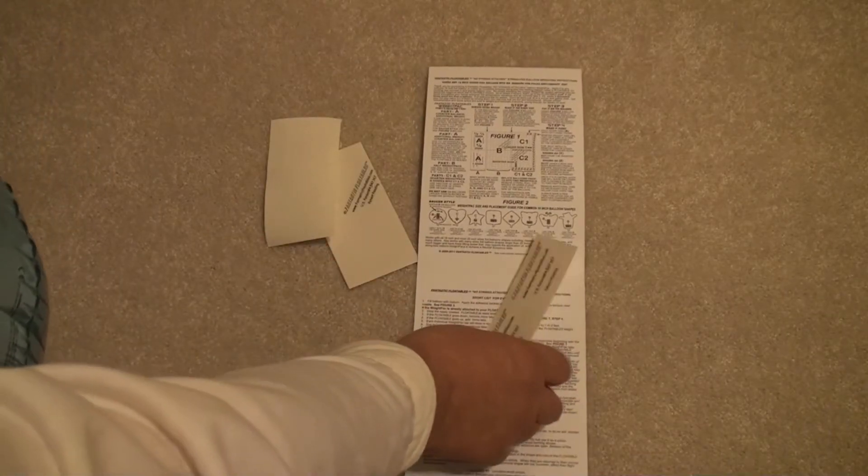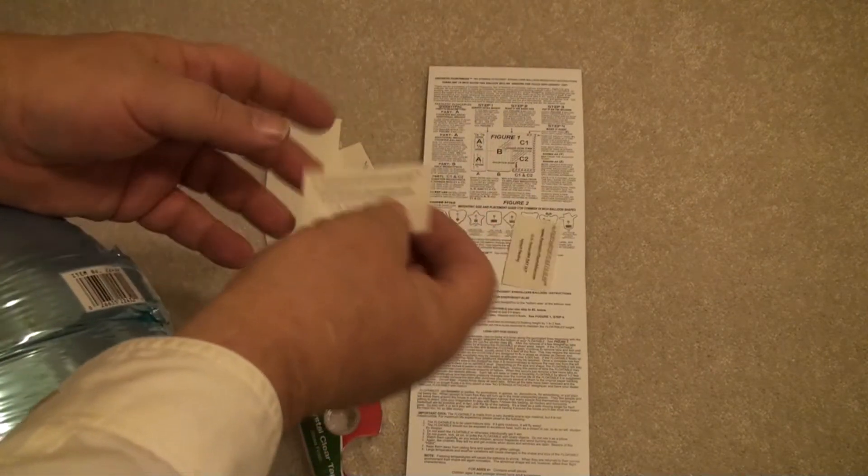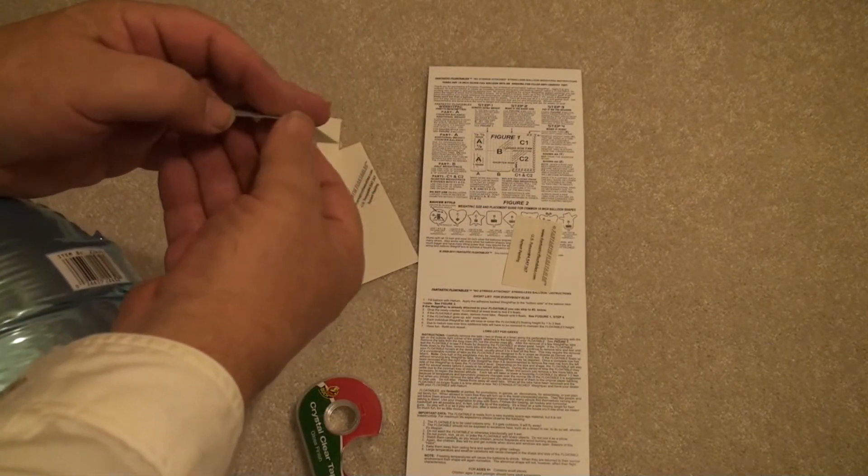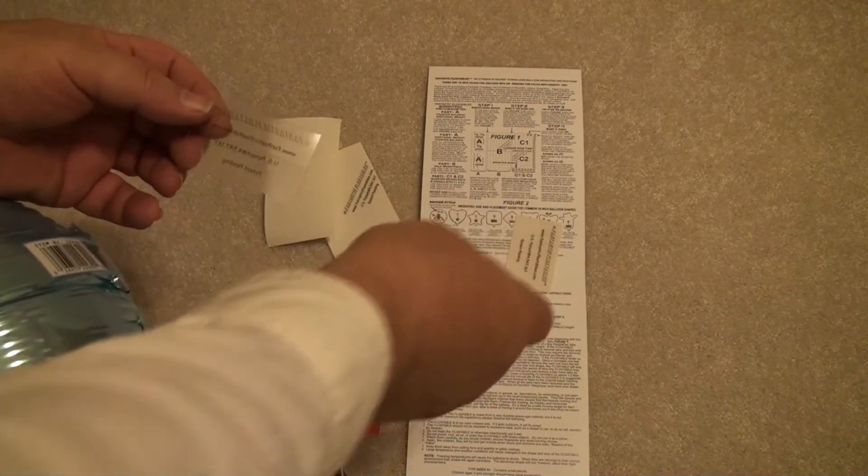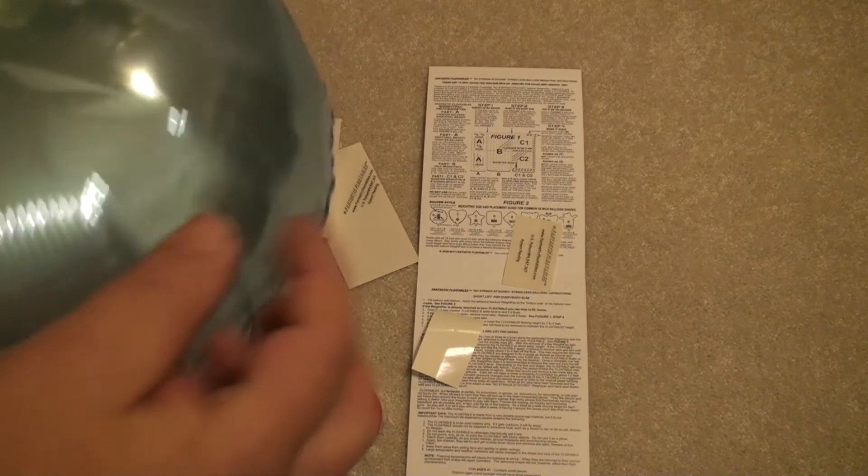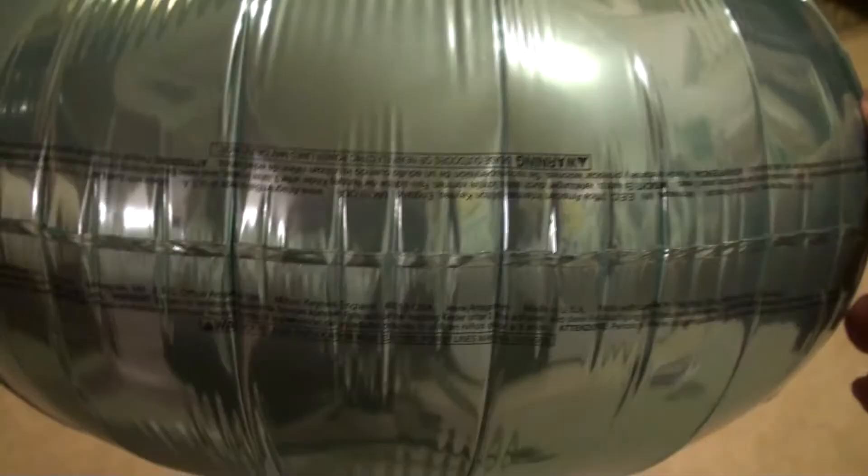The next step is the counterbalance that balances the extra weight of the nozzle so the flying saucer will fly level. Remove the paper backing from the A tab, the counterbalance for the nozzle, and find the position on the balloon where you want to locate it. It's opposite the nozzle, in line with the weights on the bottom of the balloon. You can put it on creases and it will stay secure.